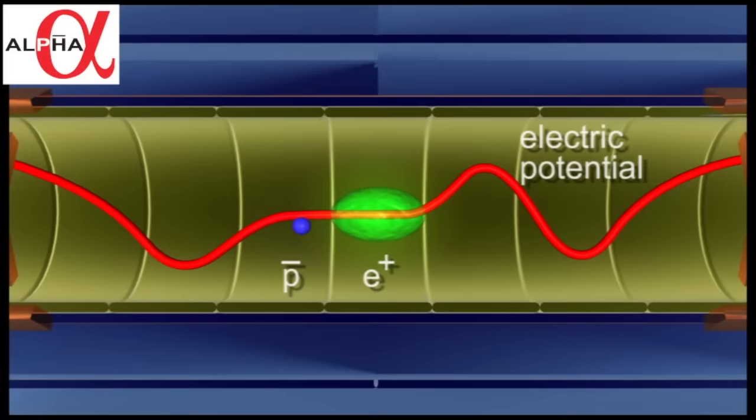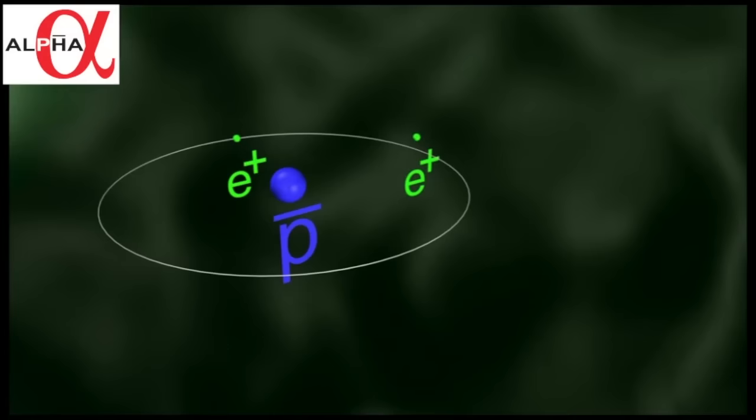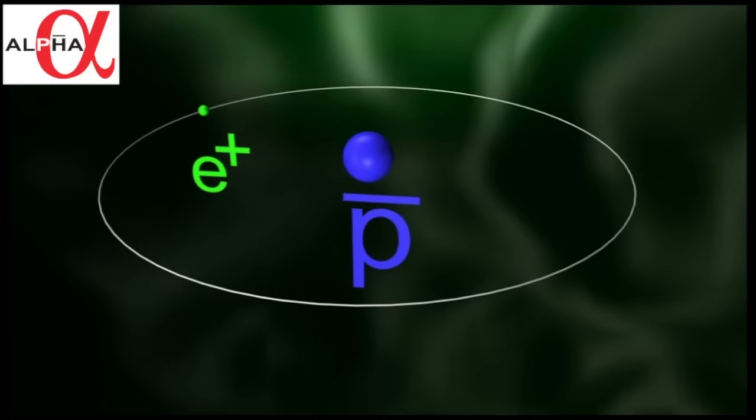Antiprotons enter the positron plasma, and through a collision of three particles simultaneously, a positron can be bound to an antiproton, and the excess energy is taken away by another positron, and we have antihydrogen.